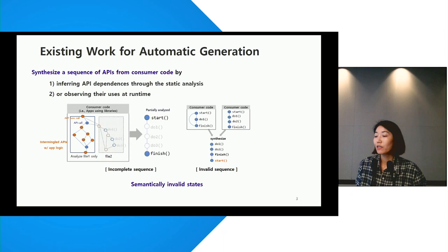To reduce the manual work, existing research has proposed automated methods for generating fuzz drivers, which synthesizes a sequence of APIs from consumer code. These methods either infer API dependencies through static analysis or observe their uses at runtime. These are general purpose and broadly applicable.